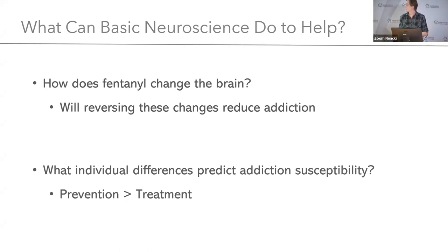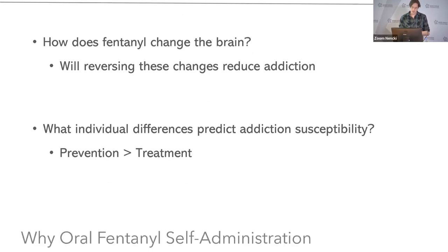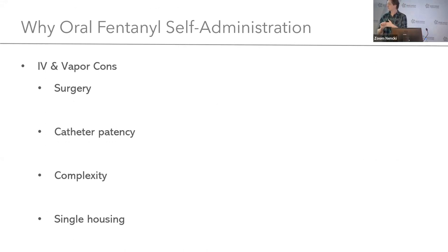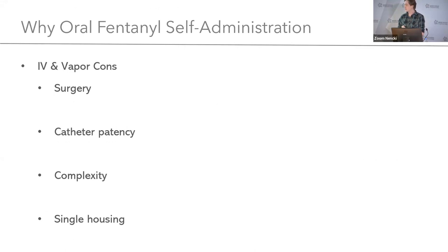To answer these questions, we rely on preclinical behavioral models in rats and mice — I work primarily in rats now. The gold standard for these preclinical models is the IV and vapor self-administration models. These are good, stable models, but they're also very complicated and require surgeries or expensive equipment, often single housing for animals with things like backpack catheters. So it's difficult for labs to get into this, and it can be a deterrent to accelerating use of these models.